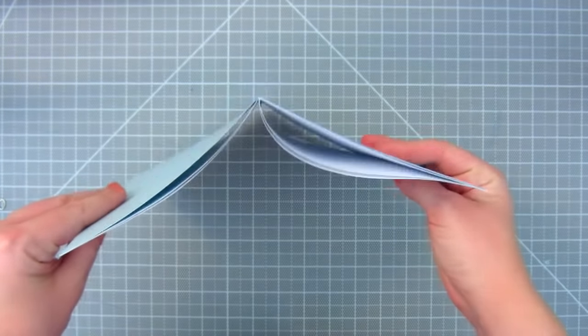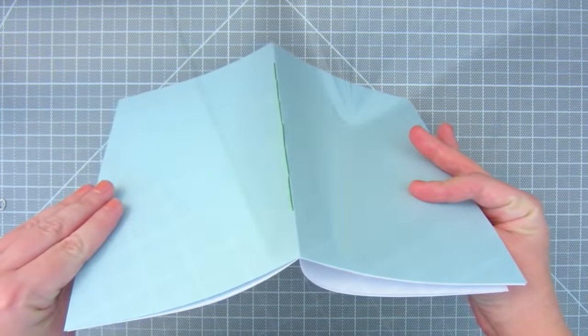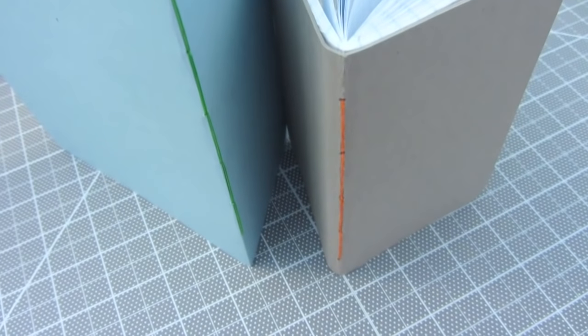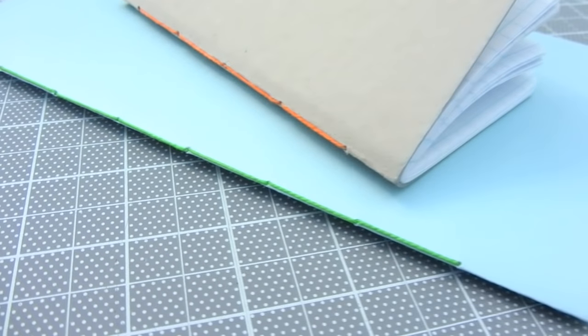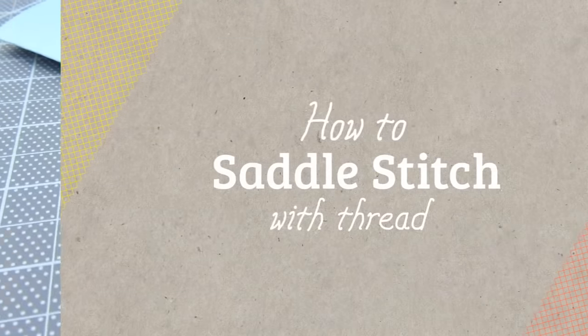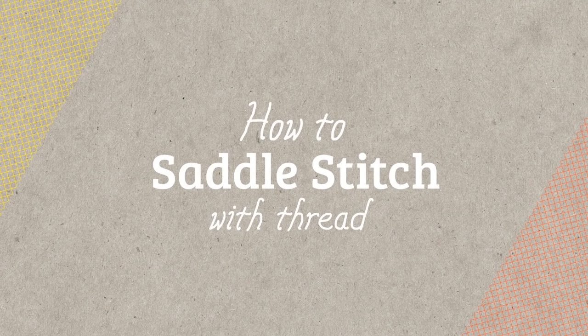Saddle stitch binding is quick and easy to do and doesn't require any glue. In this tutorial, I'll show you how to saddle stitch your book using thread.